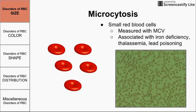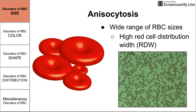The opposite of macrocytosis is microcytosis, which means small red blood cells. This is also measured with MCV and is associated with diseases such as iron deficiency, lead poisoning, and thalassemia. Thalassemia means a problem making hemoglobin — specifically the globin part. The globin is a globular protein that red blood cells make to create hemoglobin, the oxygen carrier. When you have a deficiency in the process that makes globin proteins, you make less hemoglobin, resulting in smaller red blood cells.